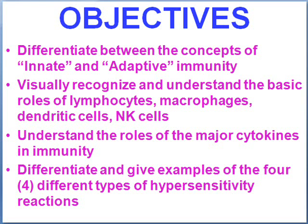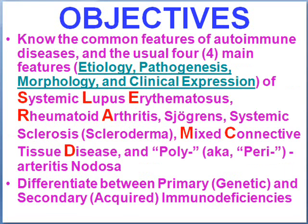Our objectives will be to differentiate between innate immunity — the immunity you're born with — and adaptive immunity, which is developed by exposure to foreign antigens. We're going to recognize the basic cells of immunity and their functions, the roles of major cytokine players, the classical four types of hypersensitivity, and the four major systemic autoimmune diseases: lupus, rheumatoid arthritis, Sjögren's syndrome, and scleroderma — now more properly called systemic sclerosis — as well as mixed connective tissue disease and autoimmune arteritis generally known as poly- or peri-arteritis nodosa.